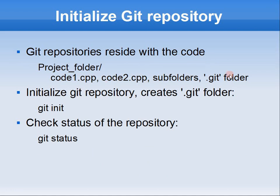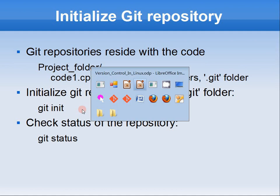Say you have a folder with source code files and no git repository yet. All you need to start using git is to issue the command 'git init'. It will initialize the repository — it creates an empty blank repository. It will not automatically add your source files.